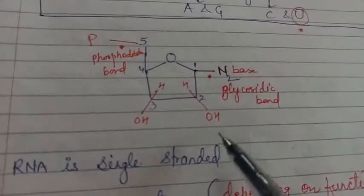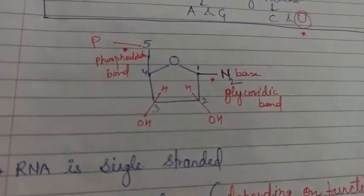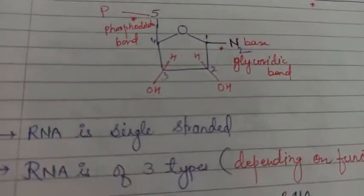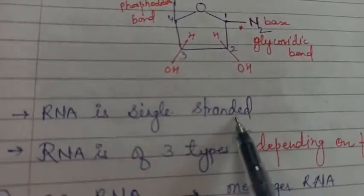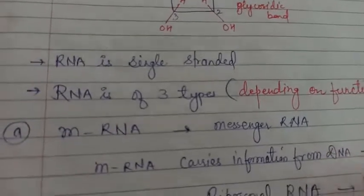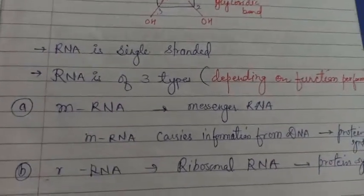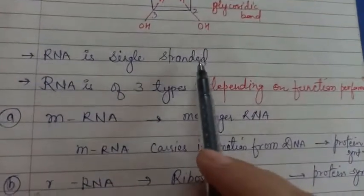When many nucleotides of such type join together they make the entire chain of RNA. So RNA is single stranded. This is a very important difference between DNA and RNA. DNA is double helical structure but RNA is single stranded. It is one strand.